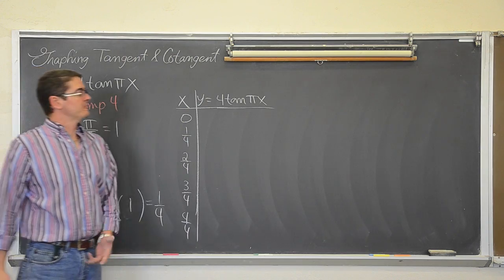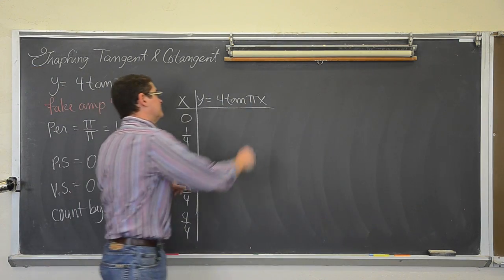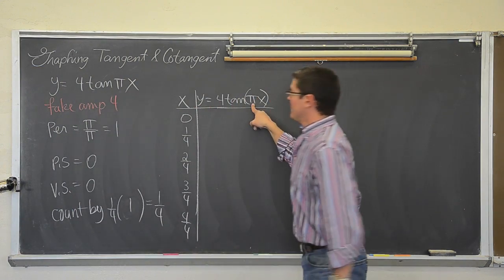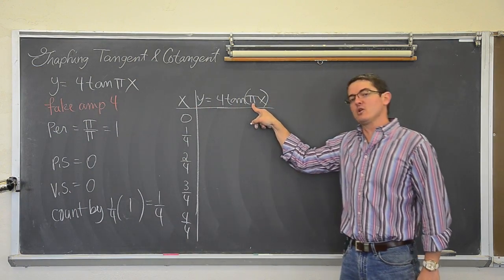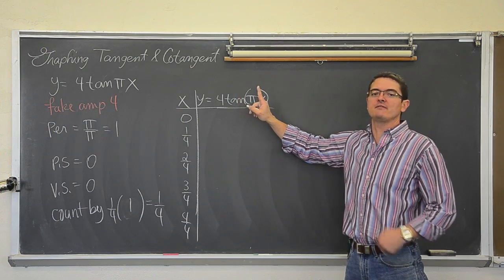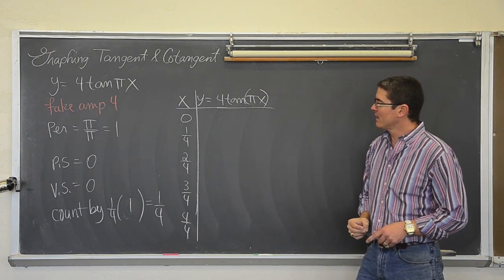There are no π's in the x-values, but the π is right there in the equation. We are going to take that x, multiply it by π first, then take the tangent of that value, and then finally multiply by 4.